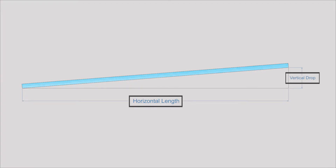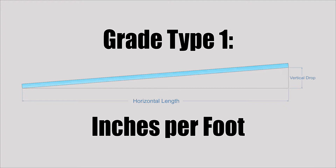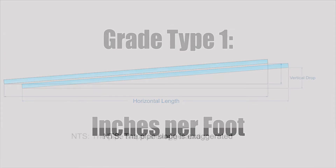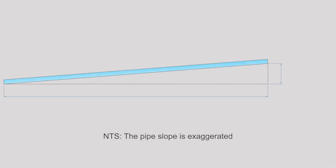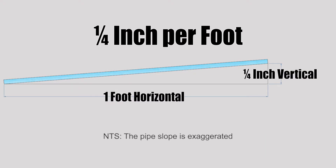Pipe grades can be expressed in a number of different ways. A really common one in the field is inches per foot. To illustrate this, let's look at a pipe that is graded at quarter inch per foot. What this grade means is that every foot horizontally that this pipe runs, it will either rise or drop a quarter of an inch vertically.